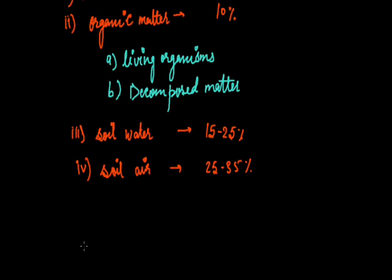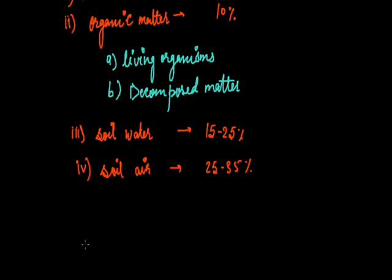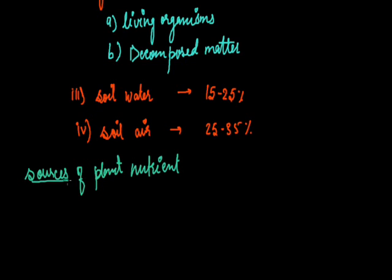Now, sources of plant nutrients — where do plants get their nutrients from? Plants obtain their nutrients mainly from the soil. Out of a total 16 nutrients, as many as 13 are absorbed from the soil.